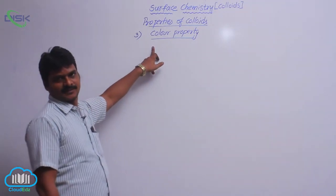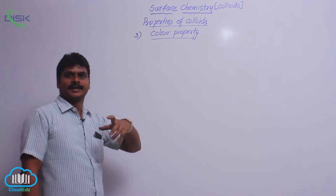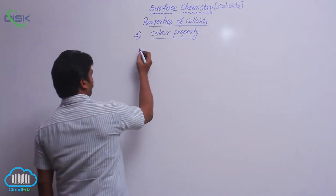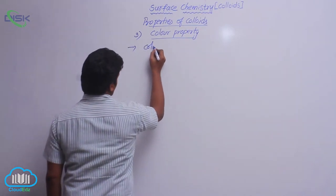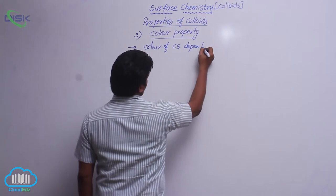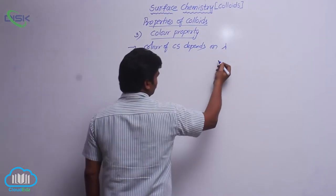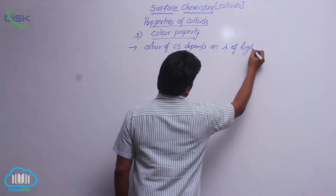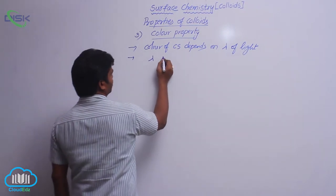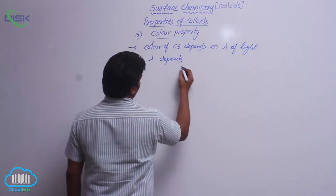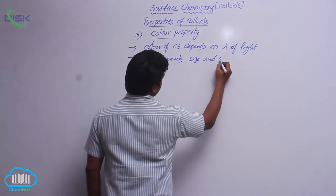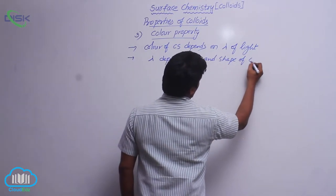The third property is color. We see different colors by the scattering of colloidal solutions. The color of a colloidal solution mainly depends on the wavelength of light used, and this wavelength in turn depends on the size and shape of the colloidal particles.